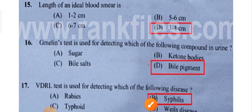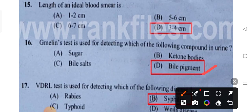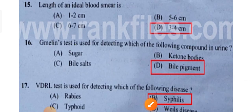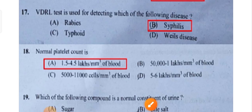Gimlin's test is used for detecting which of the following components in urine — bile pigments. Gimlin's test is used to detect bile pigments in urine.